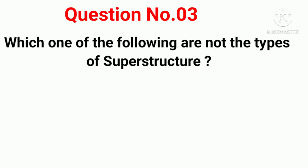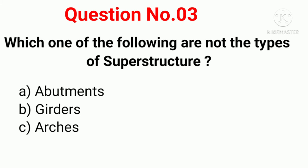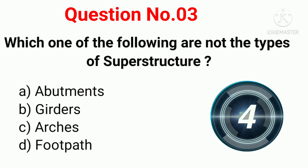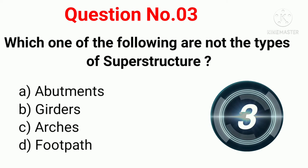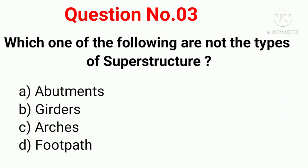Q3. Which one of the following is not a type of superstructure? Option A: Abutments. Option B: Girders. Option C: Arches. Option D: Footpath. Correct answer: Option A, Abutments.